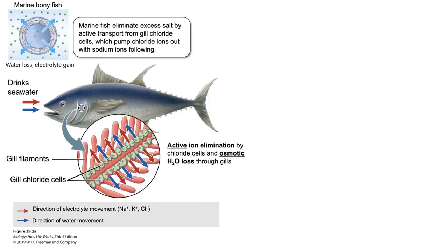Marine fish have to figure out a way to eliminate excess salts, but also take in lots of water because they're losing water through osmosis. What they've evolved are these things called gill chloride cells that basically help to pump excess salts out of the marine bony fish. So let's talk about what they do and how it works.